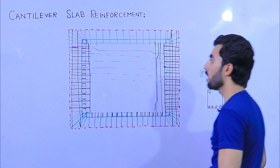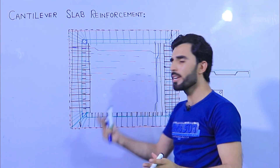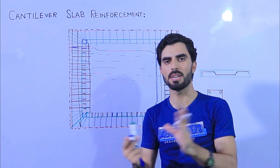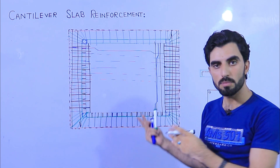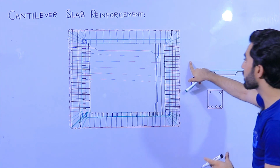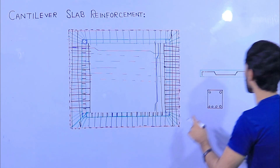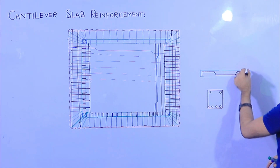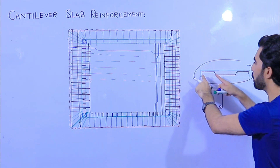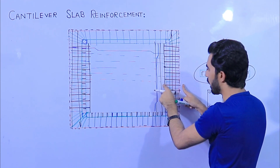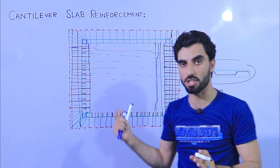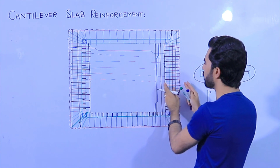You may ask: what should be the spacing? You can keep the same spacing — for example, six inches, or 15 centimeters, or 150 millimeters. So the method is: first, the bent-up bar near the support should be extended to the cantilever slab on each side. But the bottom bar should not be extended, because the bottom bar cannot work properly in a cantilever.